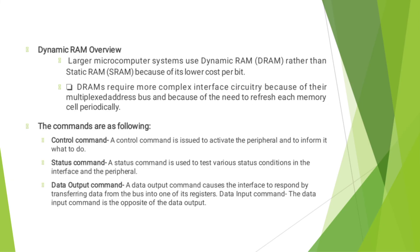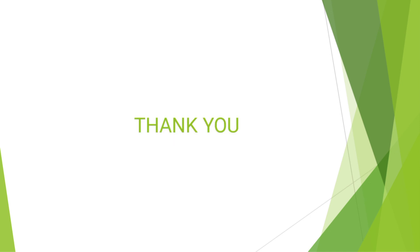The control command is issued to activate the peripheral and to inform it what to do. A status command is used to test various status conditions in the interface and the peripheral. The data output command causes the interface to respond by transferring data from the bus into one of its registers. The data input command is the opposite of the data output command. Thank you.